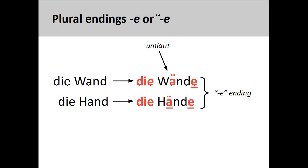A few feminine nouns having only one syllable, such as Hand, hand, and Wand, wall, also add an -e plural ending and an umlaut: Hände und Wände.